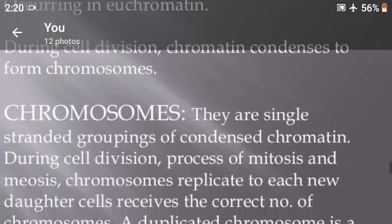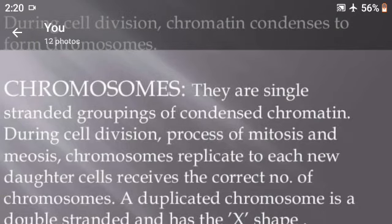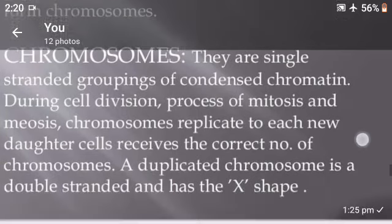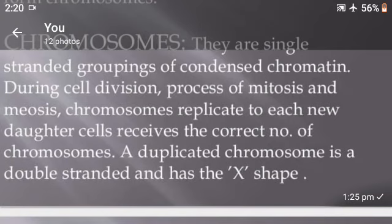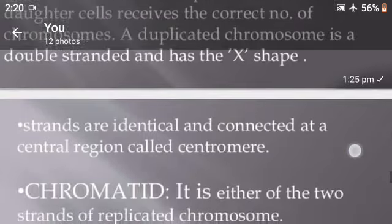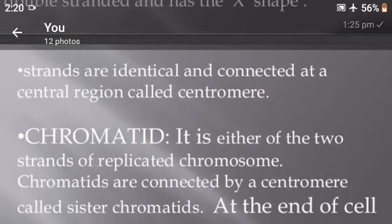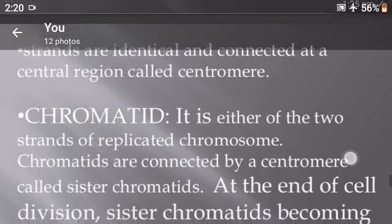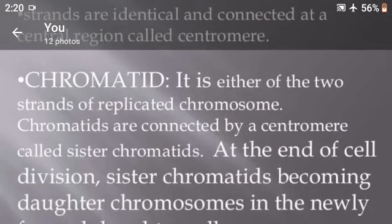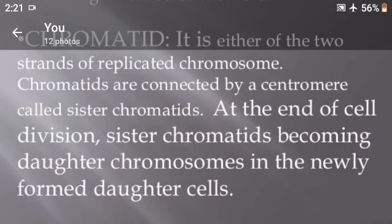Chromosomes are single groupings of condensed chromatin. During cell division — the processes of mitosis and meiosis — chromosomes replicate so that each new daughter cell receives the correct number of chromosomes. A duplicated chromosome is double-stranded and has an X-shape. The two strands are identical and connected at the central region called the centromere. Chromatid: it is either of the two strands of a replicated chromosome. Chromatids connected by a centromere are called sister chromatids. At the end of cell division, sister chromatids become daughter chromosomes in the newly formed daughter cells.